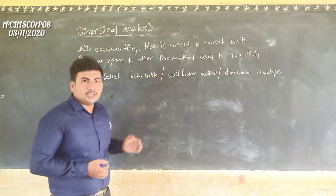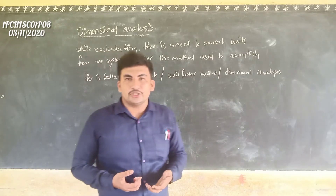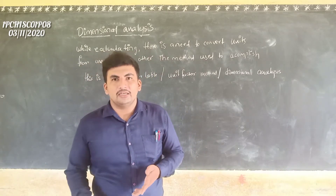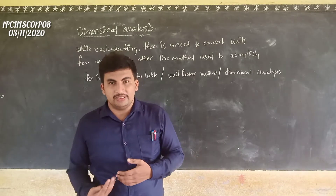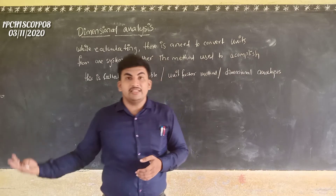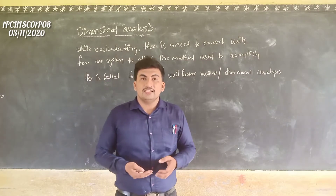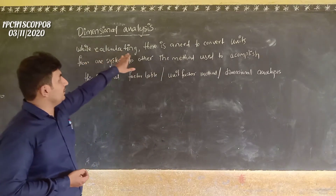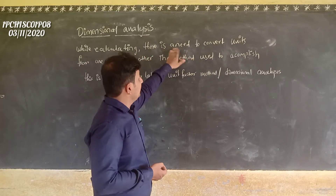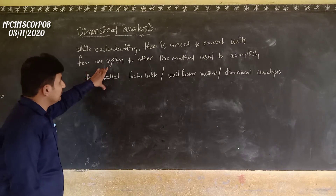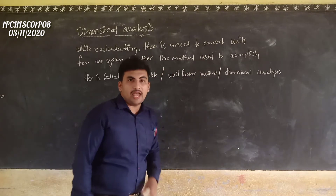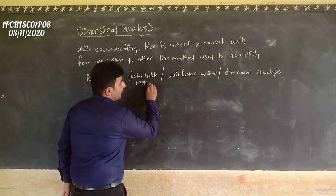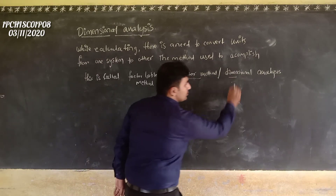Now, while doing calculation, we have to convert one system to another system — sometimes kg to gram, or inch to centimetre, or two days to seconds. The method used to accomplish this is called the factor label method, or unit factor method, or dimensional analysis.